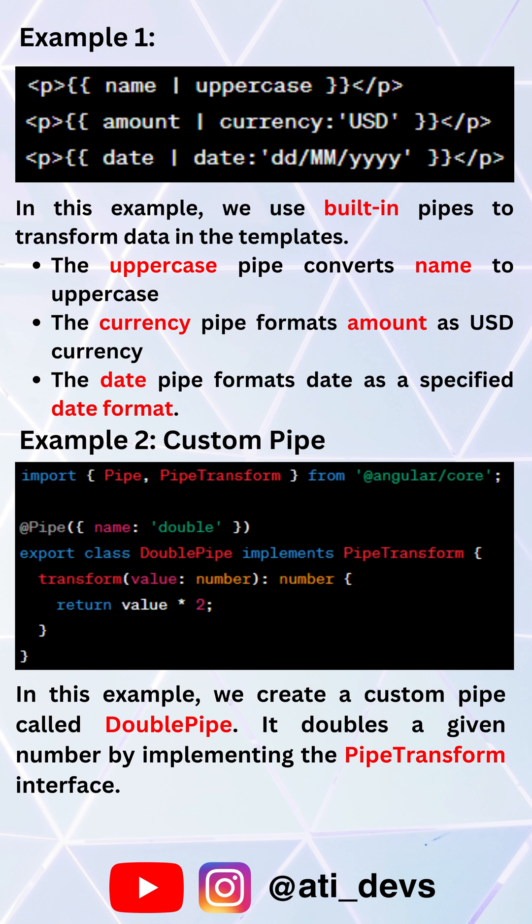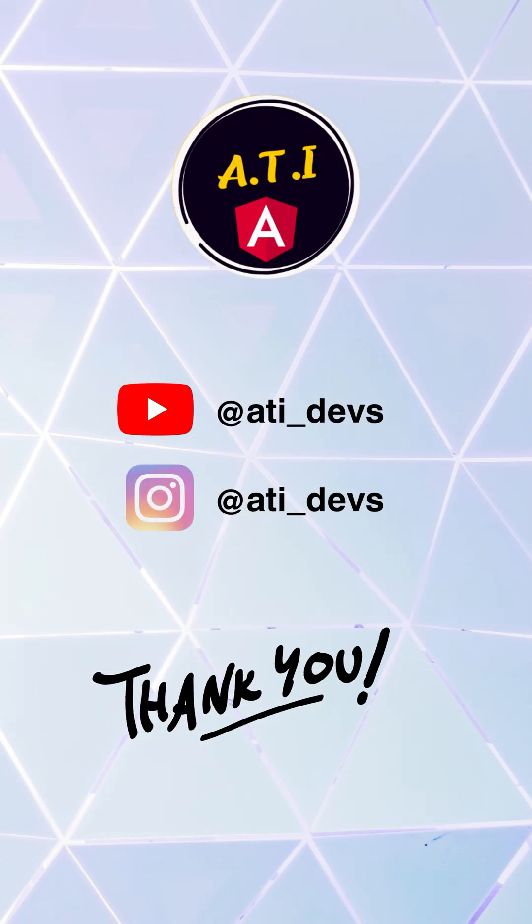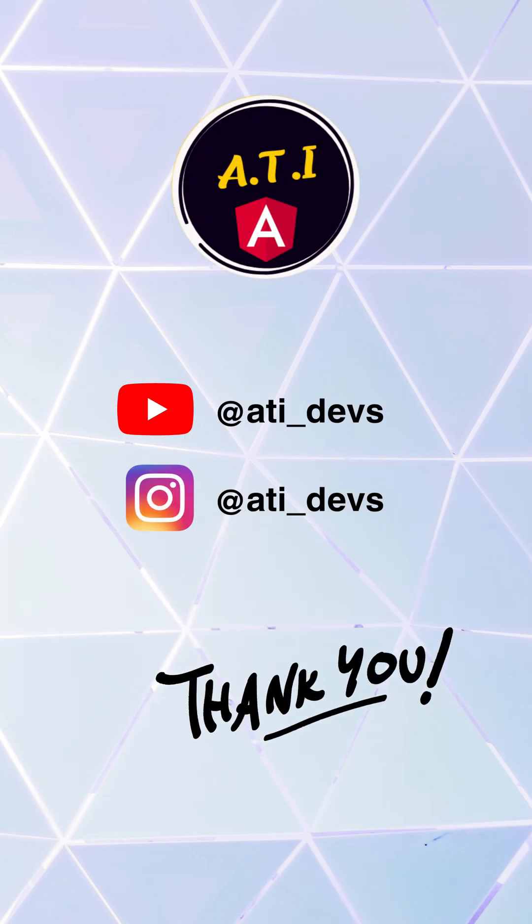In the second example, we create a custom pipe called the double pipe. It doubles a given number by implementing the PipeTransform interface.